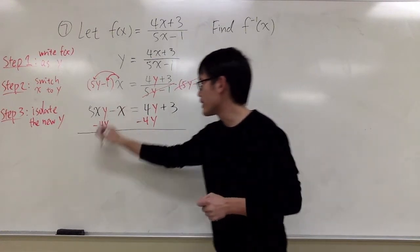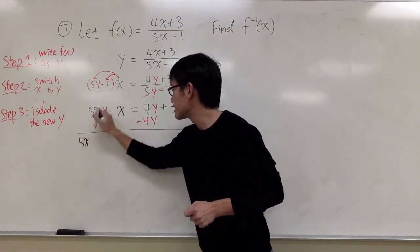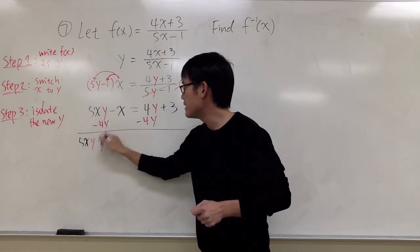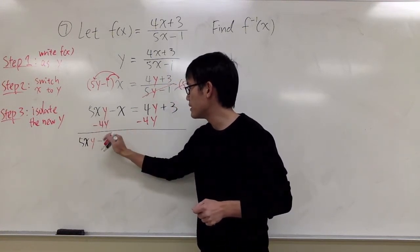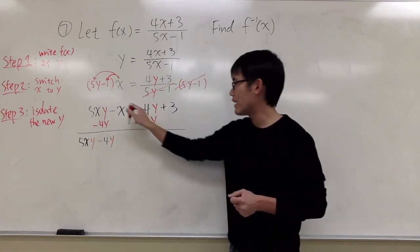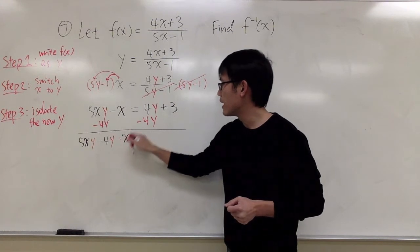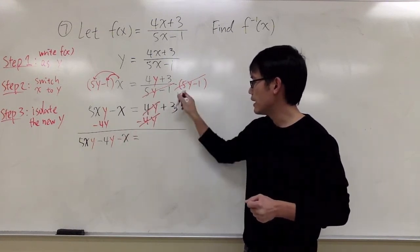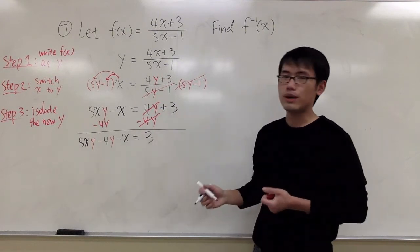And if we do that, we will get 5xy minus 4y. So minus 4y. And I still have the minus x, and I will equal to, these two cancel out already, and we have the 3 on the right hand side.